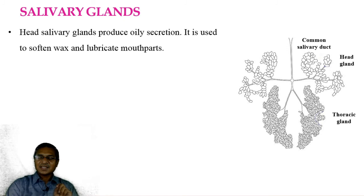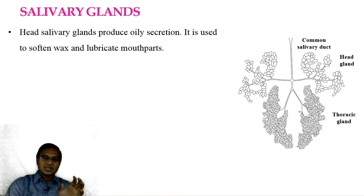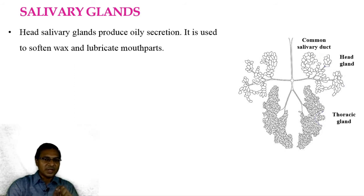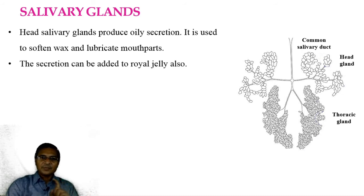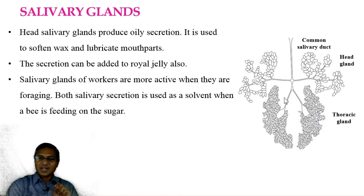The head salivary glands produce an oily secretion used to soften the wax during construction of the comb, as well as to lubricate the mouth parts — proper movement of the mouth parts requires lubrication, which is carried out by the oil secretion from the head salivary gland. That secretion can also be added to the royal jelly, which is secreted by the hypopharyngeal gland also present in the head region. The thoracic salivary glands of the worker bees are more active when they are foraging — that is, when they visit flowers for collection of pollen and nectar.